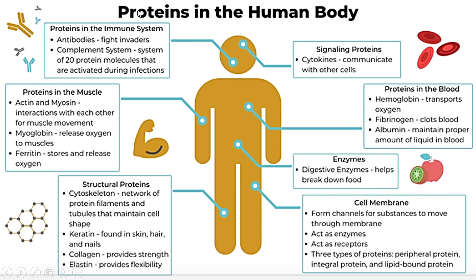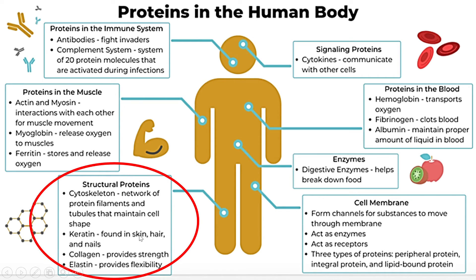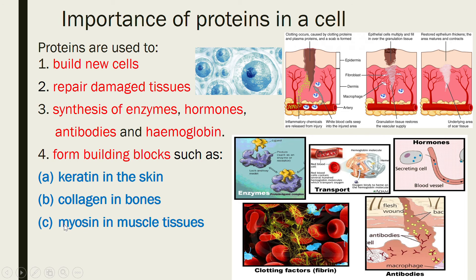Proteins also form building blocks like keratin in the skin, collagen in the bones to provide strength, and myosin in the muscle tissues. Structural proteins include keratin found in skin, hair, and nails. That is why when people have issues like hair loss or fragile nails or bones, they take supplements like collagen, also used to beautify the skin, and elastin.